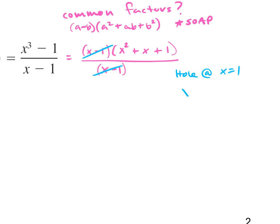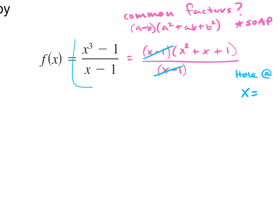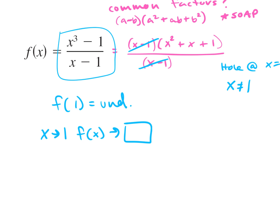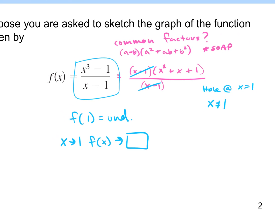In our domain, x cannot equal 1 for our original function — we can't have 0 in the denominator. So if we were asked to find f of 1, could we find it? Nope, it's undefined. It's not part of our graph, it's not in our domain — it does not exist. The idea of limits is we're going to ask: as x approaches 1, what is our graph going to be? What would our y be as x goes to 1? It's kind of like the same idea as holes, but a little different.